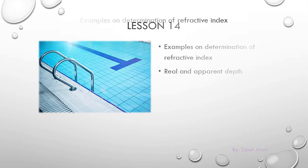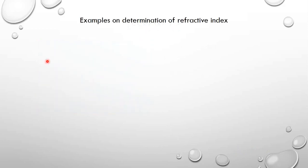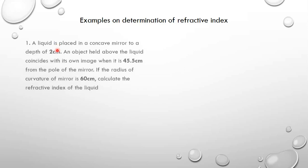Let's begin by looking at the examples on the determination of refractive index. Remember we already said the refractive index is N equals R over H, or you can have it as N equals R minus D over H minus D. So we are going to see some examples here.